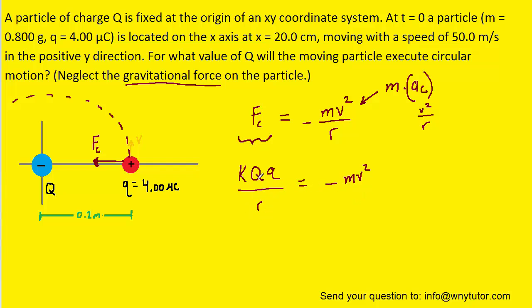Now recalling that our objective is to calculate capital Q which is the charge at the origin, we want to try to rearrange the equation to isolate capital Q. So perhaps the first thing we can do is multiply both sides of the equation by R. And then we can divide both sides of the equation by k lowercase q. And as we'll see that's going to help us isolate capital Q.